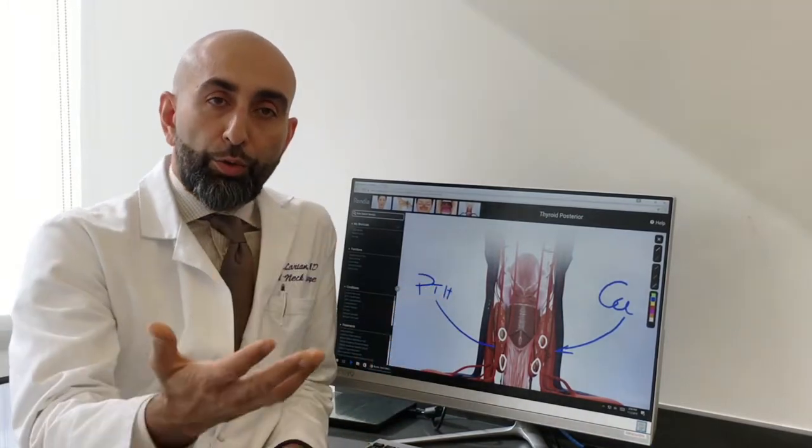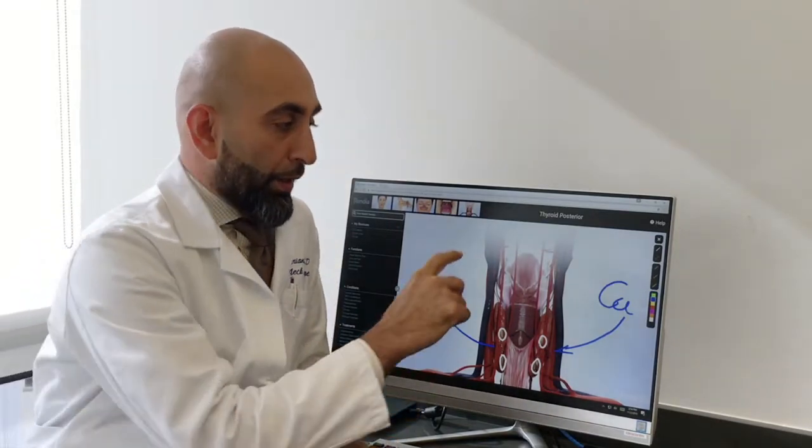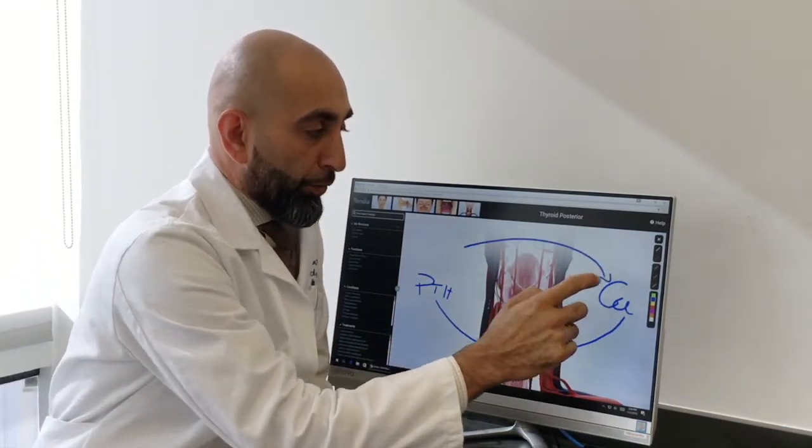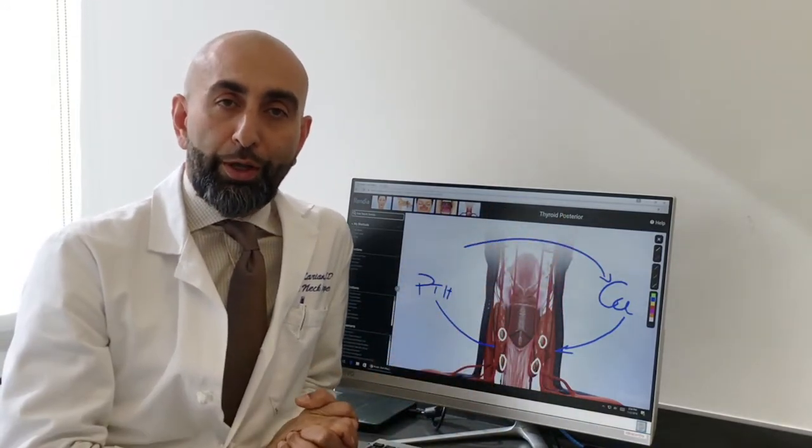Parathyroid hormones then go into the body and increase the level of calcium in the blood. And then the calcium comes back to the parathyroid glands and that's how you have a feedback loop to have a tight control over the calcium level in the body.